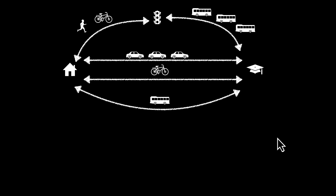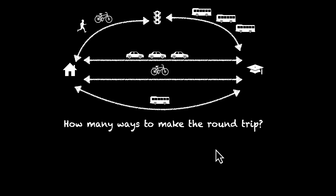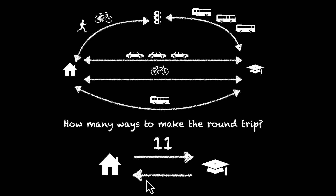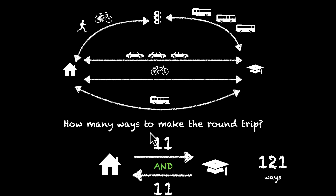Now you don't want to stay at school — you want to come back home. In the same scenario, imagine everything works in both directions. You have eleven ways to go from home to school and eleven different ways to come back. Because you have to do both — go to school AND come back home — the answer is eleven times eleven, which means 121 ways to make this round trip.